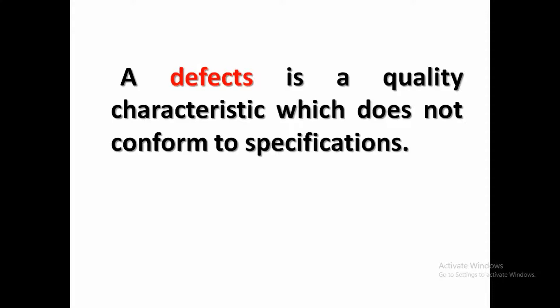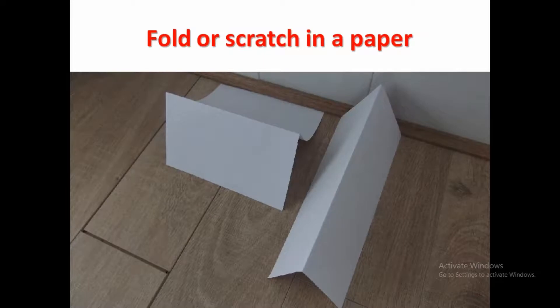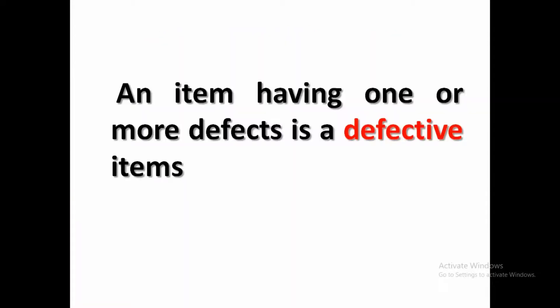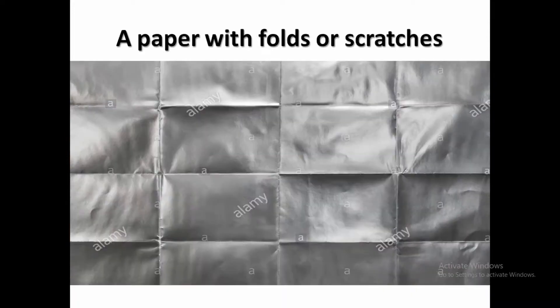Defects are flaws in a quality characteristic which do not conform to specification. For example, a broken corner of a glass pan is a defect, damage in weaving of a cloth is a defect, and a fold or scratch in paper is a defect. An item having one or more defects is a defective item. For example, cloth having misprints, a glass bottle with air bubbles, or paper with folds or scratches are defective items.